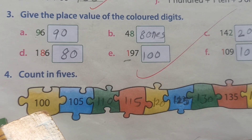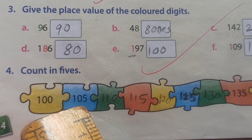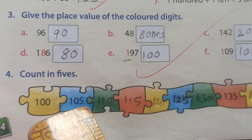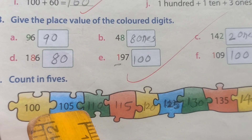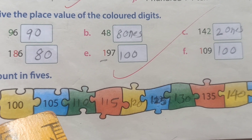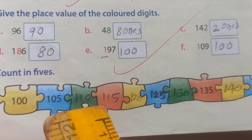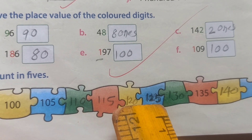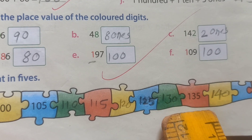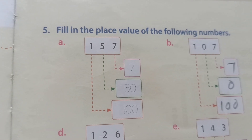Kids, now count in 5s. You can see here first number textbook given: 100. Second number given: 105. Then count: 105, plus 5 is 110, then 115, 120, 125, 130, then by jumps to 140. All of you understood? Very good.